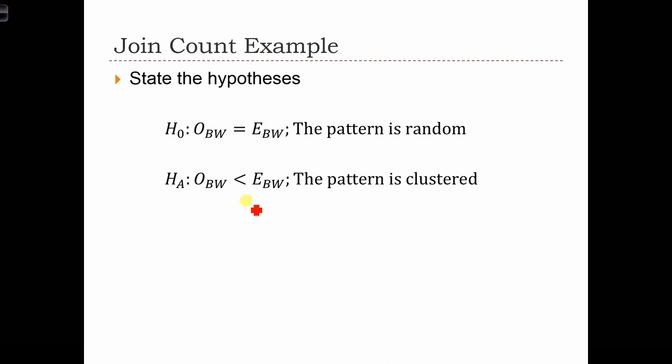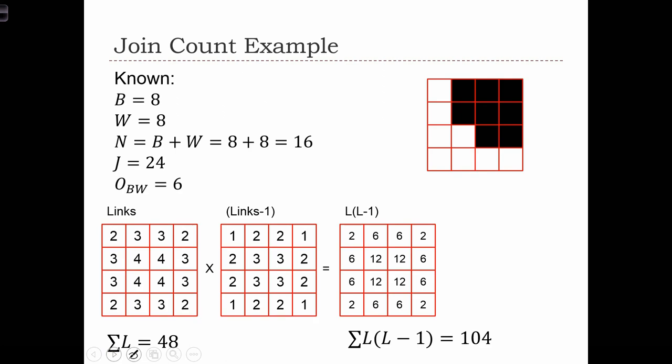Again, this is going to be a left-tailed test. In this case, the numbers of black and white cells have changed. It's now even between black and white; before we had 7 and 9. Everything else stays the same in terms of n, and j, and l, and sum of l.